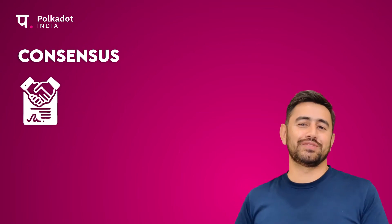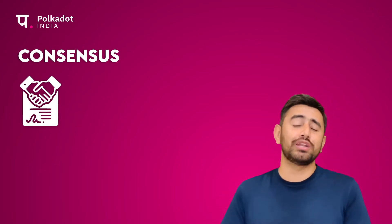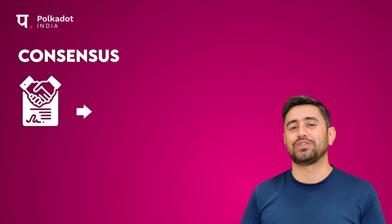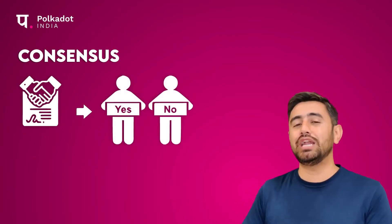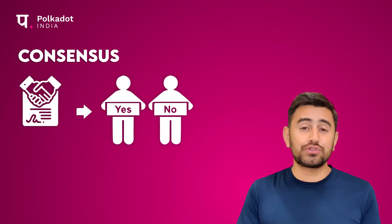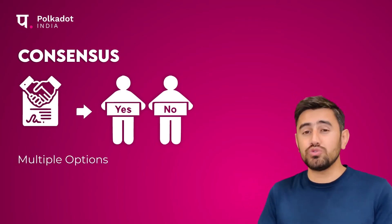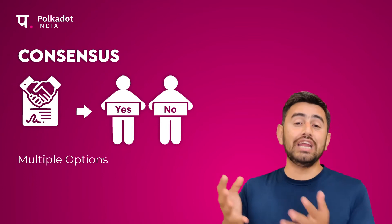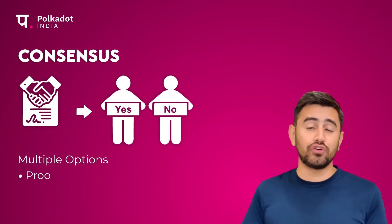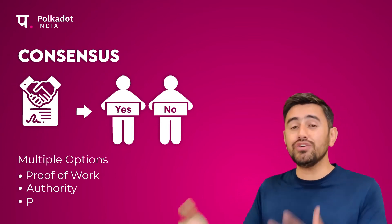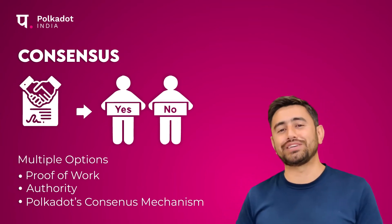Fourth is consensus. When we talk about blockchain, any new change that has to be brought into a blockchain has to go through consensus. Consensus plays a very important role in building a blockchain. Substrate can provide us multiple options to choose from when deciding on a consensus mechanism, such as proof of work, authority, and we can even choose Polkadot's consensus mechanism for that matter.